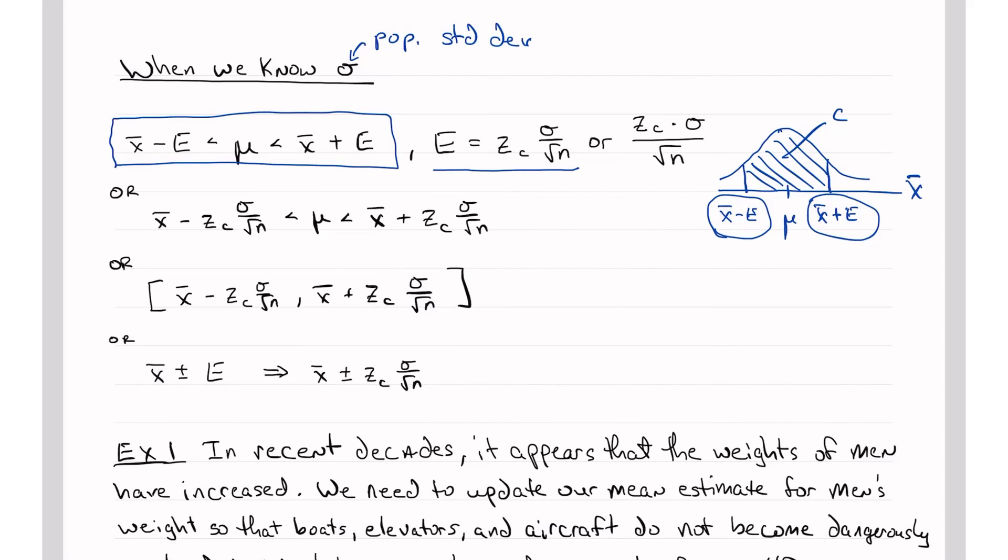So we have sigma, so we're going to use this formula for sigma. And you can read, these two expressions here are exactly the same. It's whichever you want to do, but it's z sub c times sigma divided by the square root of n. Or you can say z sub c times sigma divided by the square root of n. It gives you the same number, whichever way you look at it.